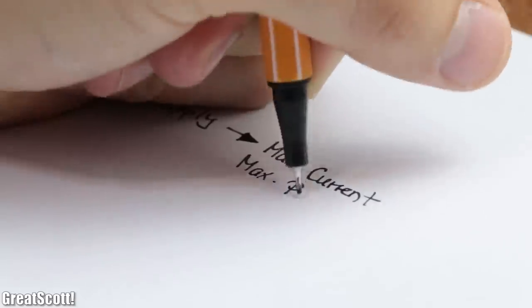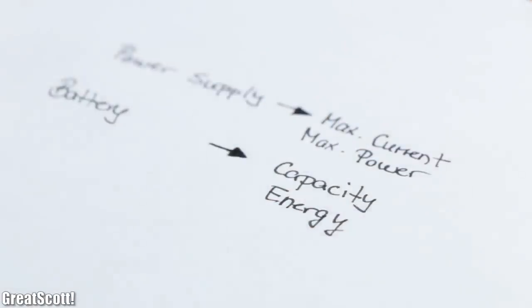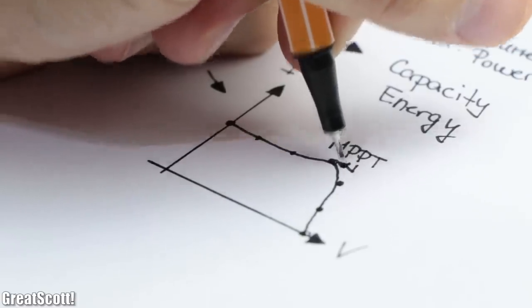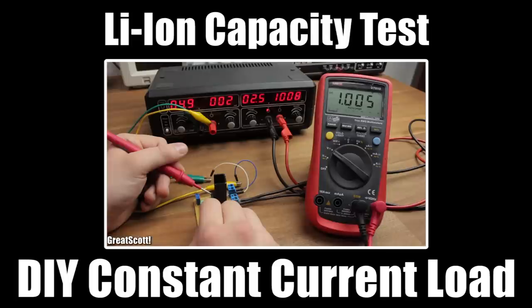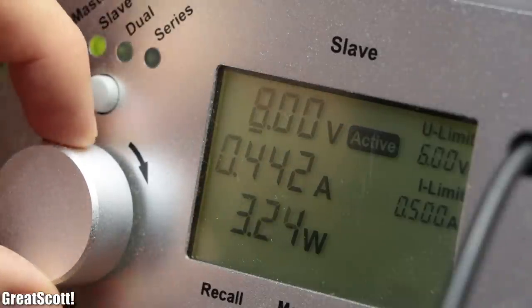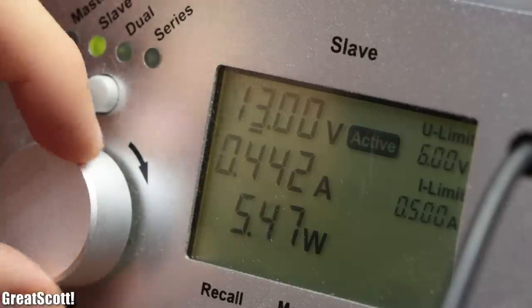This way you can determine their output capabilities or their true capacity, or even track their output power in order to find their maximum power point. In a previous video I already showed you how to create a simple constant current load, which like the name implies draws a constant current from our power source even when the power source voltage varies.